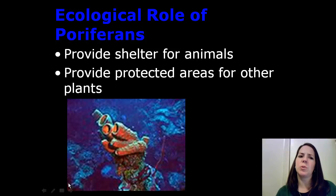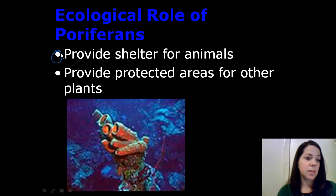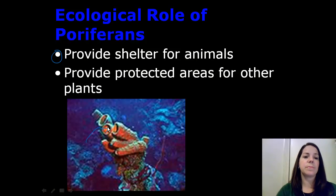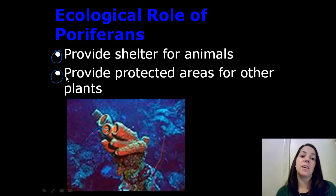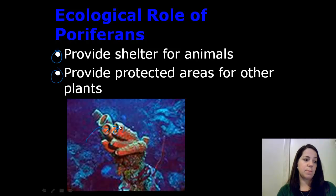Let's move on to the ecological role of Poriferans. Why do we have sponges in the marine and freshwater environments? How do they serve the other organisms that they live with? Well, number one, they provide shelter for other animals such as shrimp, snails, sea stars. These animals can actually live right inside of the sponge. Sponges also provide a protected area for other plants. So some plants grow on the outside as well as the inside of the sponge. Now these plants provide the sponge with oxygen and food and the sponge provides those plants with that protected area.